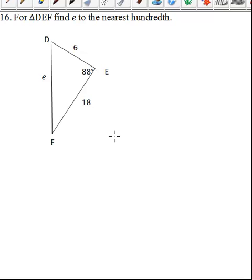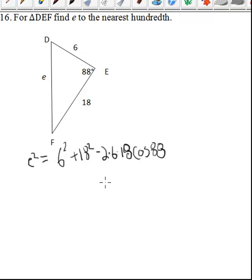Here we need to find E. And if we write our formula out, we know that E squared equals 6 squared plus 18 squared minus 2 times 6 times 18 cosine of 88. Again, even if we knew how large F or D was, it wouldn't help us because we're trying to find E. So the only angle we're interested in is the one opposite of it, which goes right here.